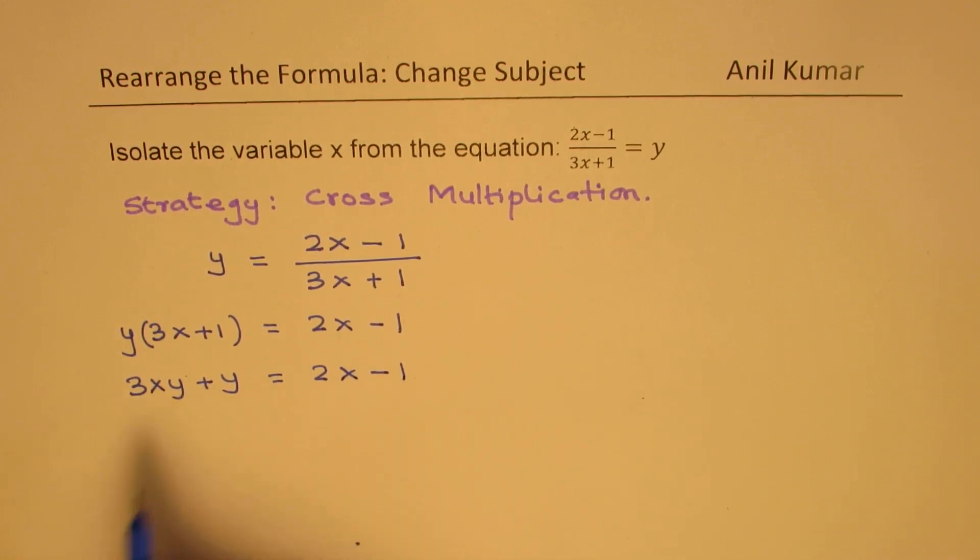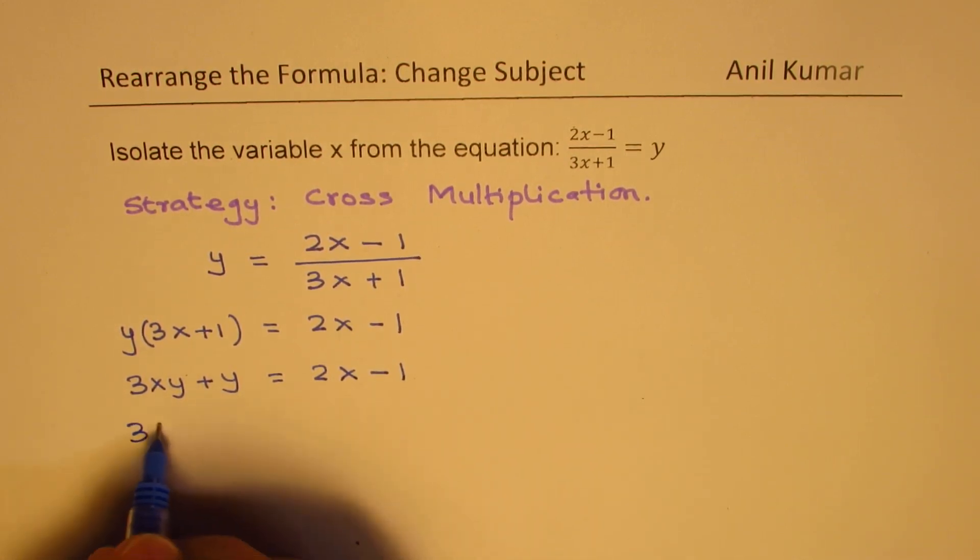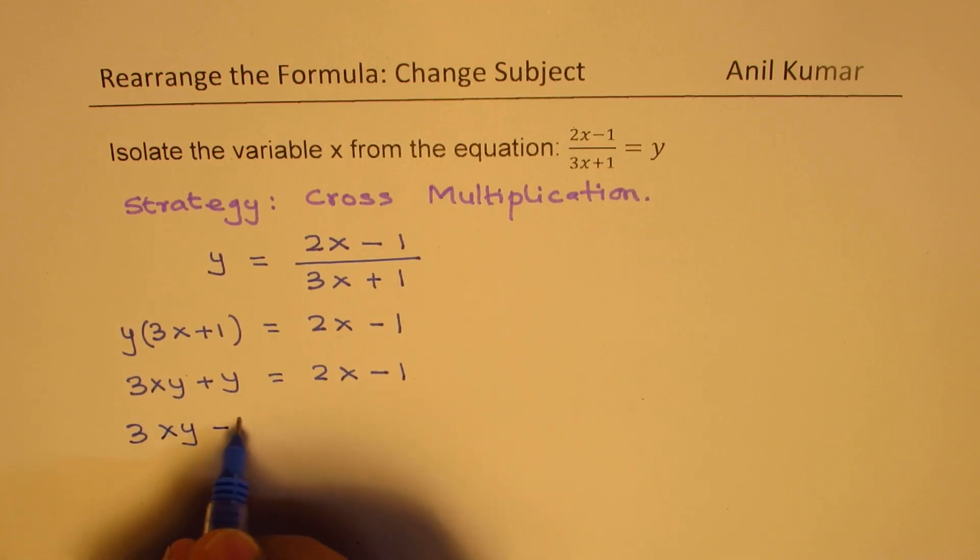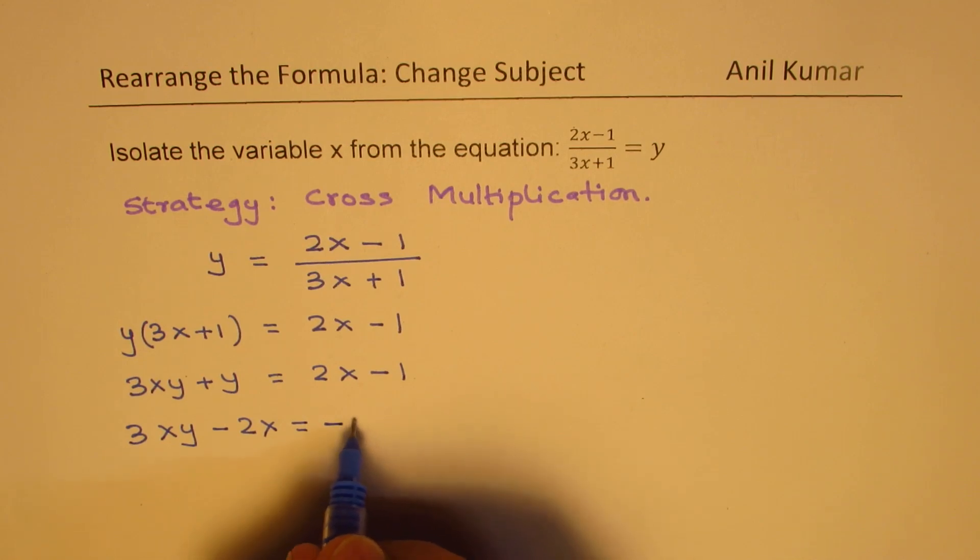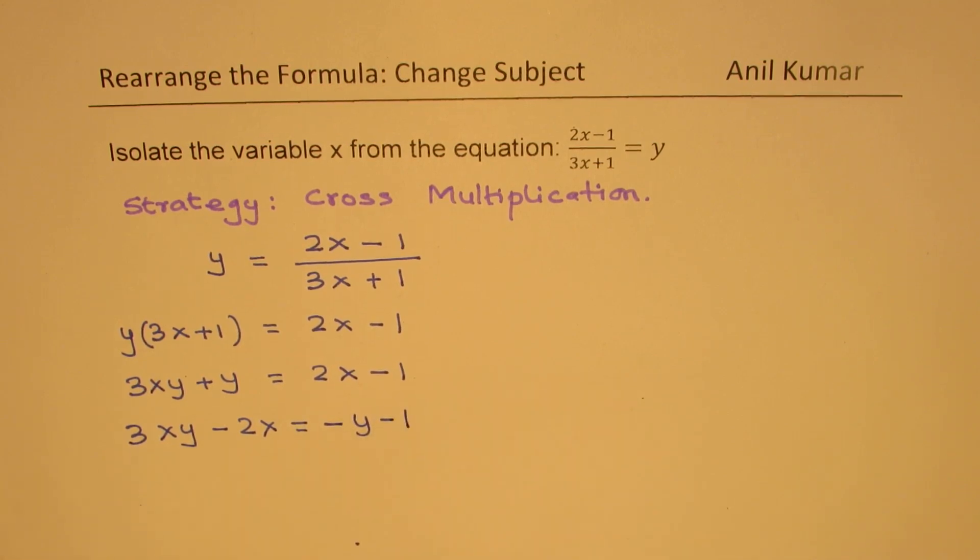Bringing the x terms to the left gives us 3xy minus 2x. Taking y to the other side, that is minus y minus 1.